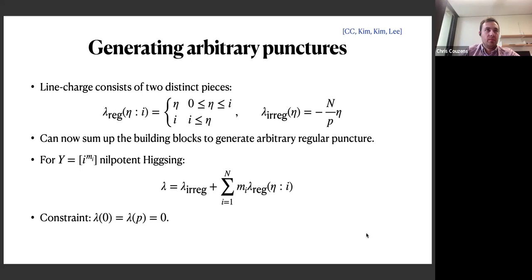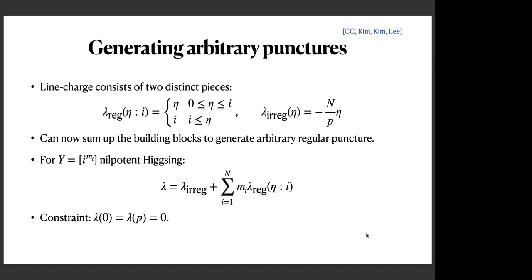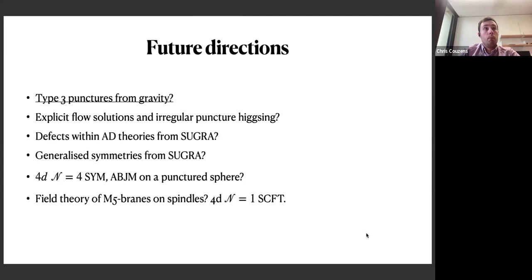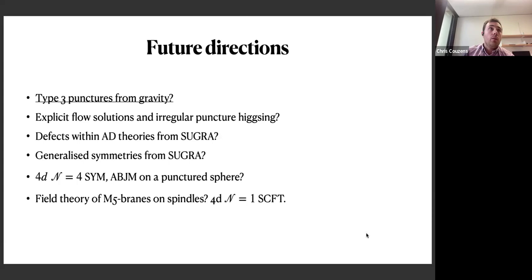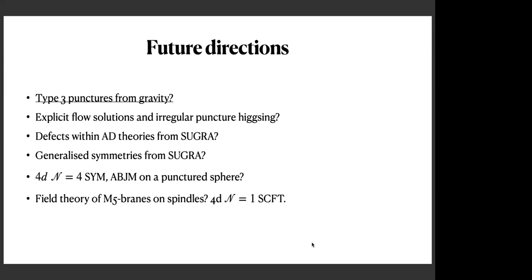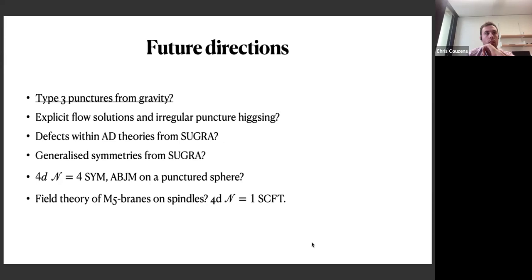A final question concerns the comment about 4D N=4 Super Yang-Mills. The speaker clarifies: one can look at the 2D (2,2) theory obtained by compactifying the 4D theory on a punctured Riemann surface. The supergravity solutions work the same way but now require two Higgs fields. This 2D (2,2) theory is in the same spirit as Argyris-Douglas theories — a compactification on a punctured sphere — but the field theory duals are unknown.